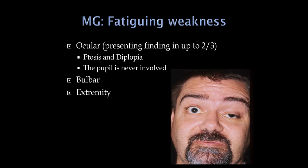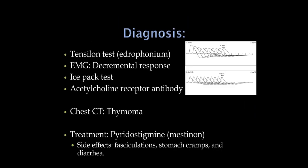How do we diagnose myasthenia? The tensilon test uses intravenous edrophonium, a potent inhibitor of acetylcholinesterase, so we have more acetylcholine available at the neuromuscular junction for a few minutes. The remaining unbound nicotinic receptors are stimulated, and the patient has a brief improvement in objective findings such as ptosis or weakness. On EMG, repetitive nerve stimulation in myasthenia gravis produces a decremental response — the electrical representation of fatiguing weakness.